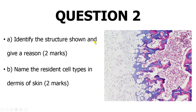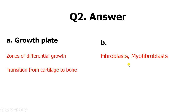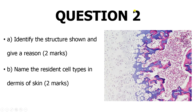Question two: identify the structure shown and give a reason, then name the resident cell types in the dermis of skin. This structure is actually the growth plate. We identify it by the zones of differential growth and the transition from cartilage to bone — that differentiation of zones.